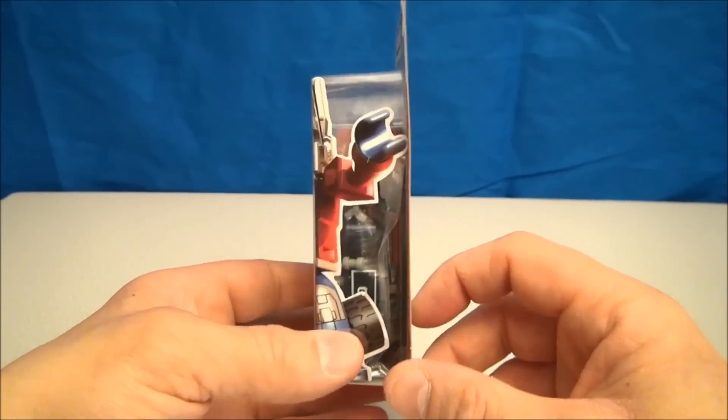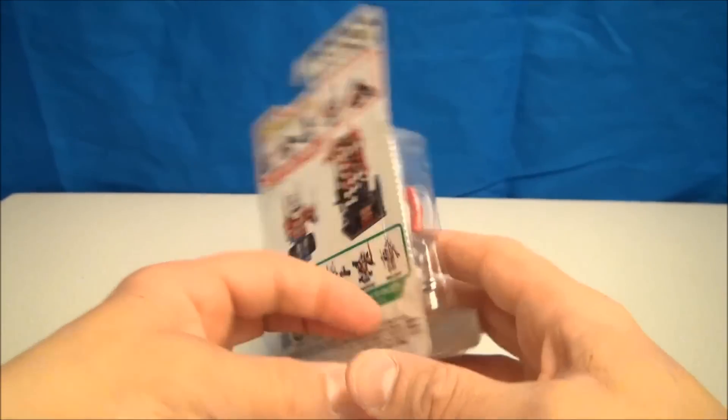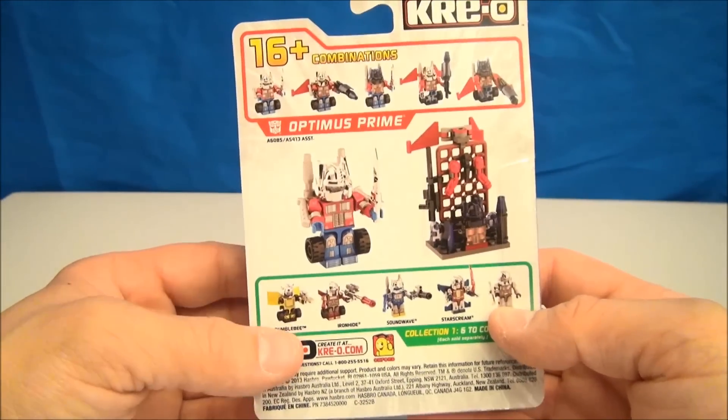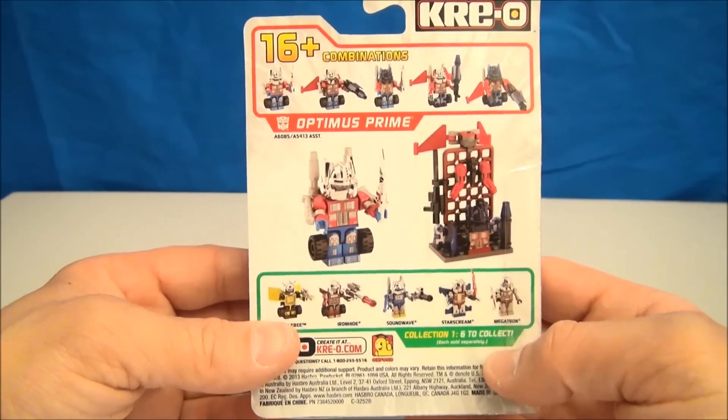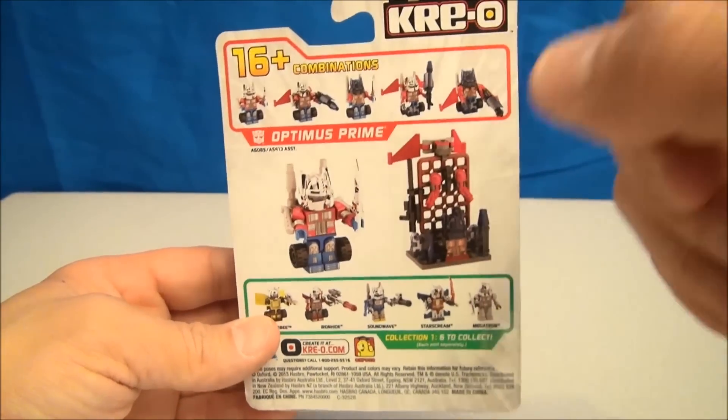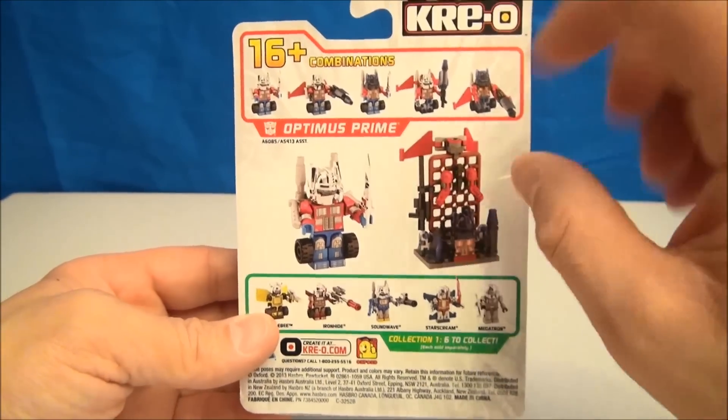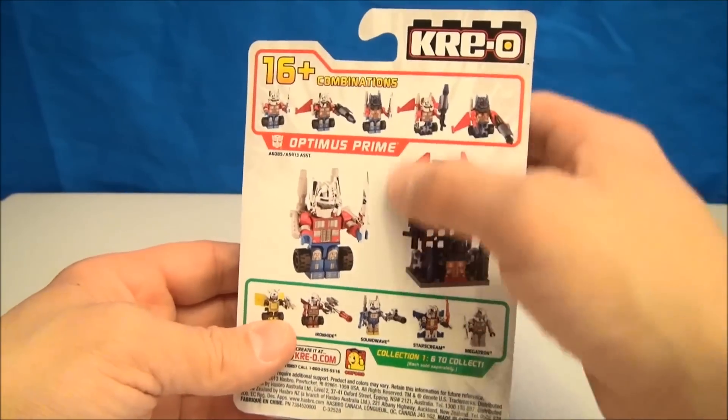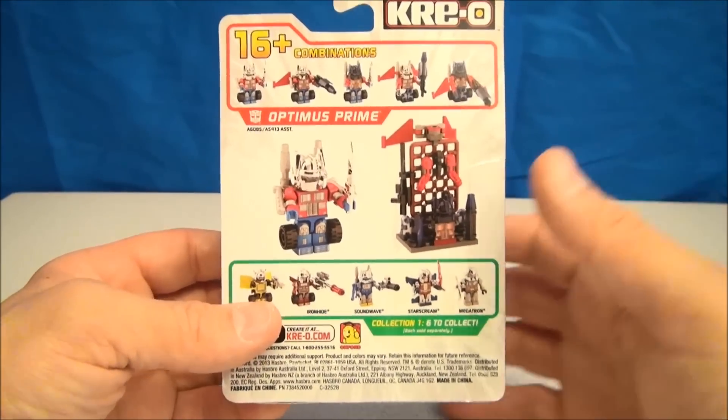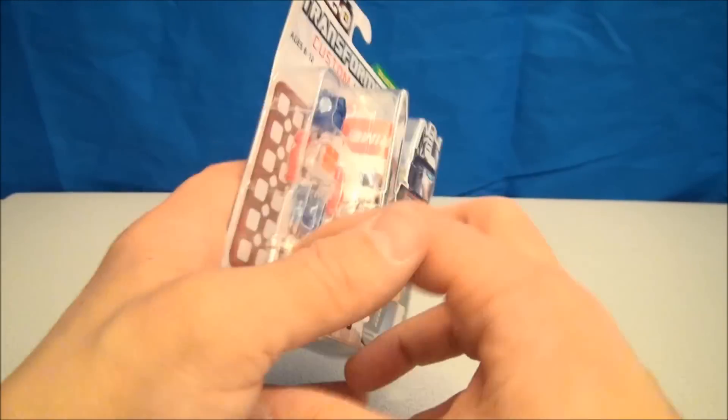These can be found either in the Transformers aisle or the Lego aisle. They come with a bunch of stuff to make your Kreons customizable or custom, if you will. This also comes with this little framework here and then you can hang all your extra goodies off of it if you don't want to just throw them into a little box or bag or something.